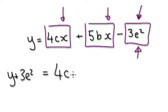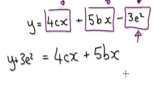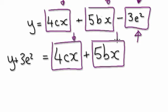So you would have this: plus 5bx. Now visualize as this: this bubble, plus this bubble here. You're trying to make x the subject, but x appears in two places. So this is where factorization comes in.